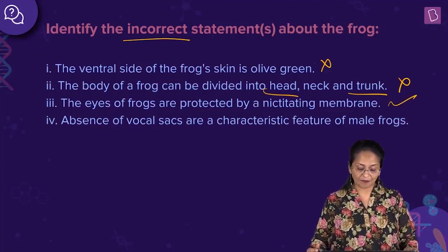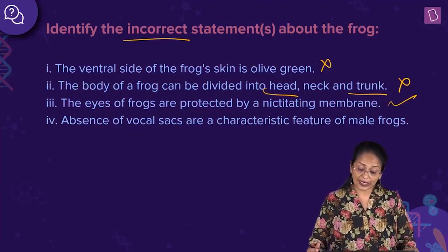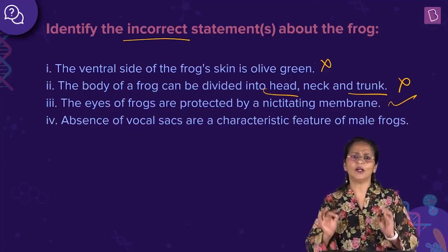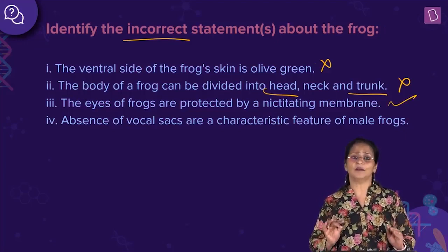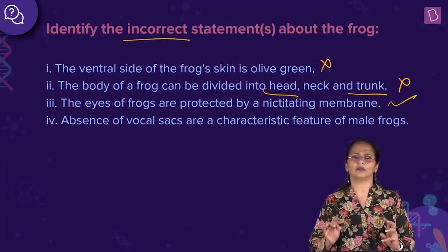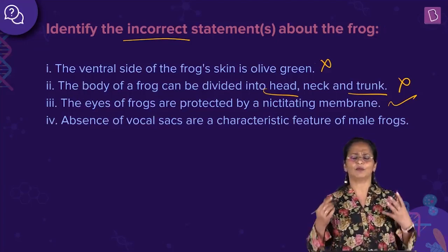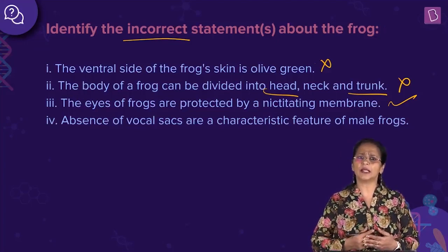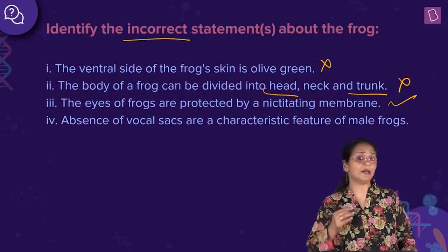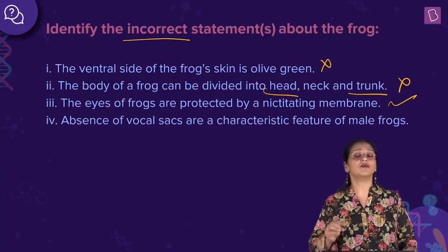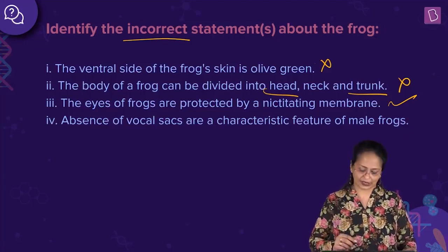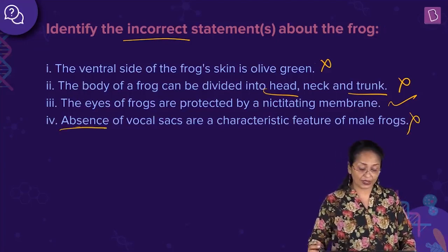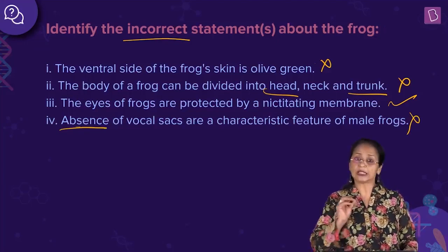Statement four: absence of vocal sacks is a characteristic feature of male frogs. During mating season all you can hear from frogs is the croaking sound, and it is the males producing it. This is a characteristic feature of male frogs because of the presence of vocal sacks. So this statement is incorrect because it says absence — presence of vocal sacks is the characteristic of male frogs. So statements one, two, and four are incorrect.